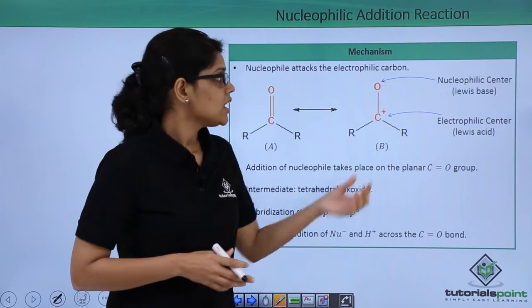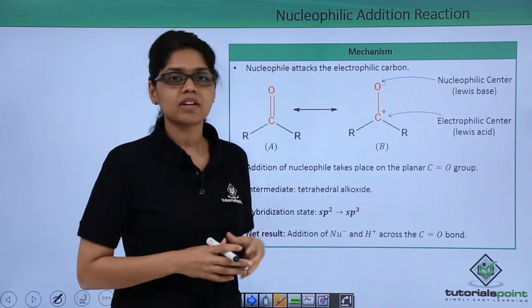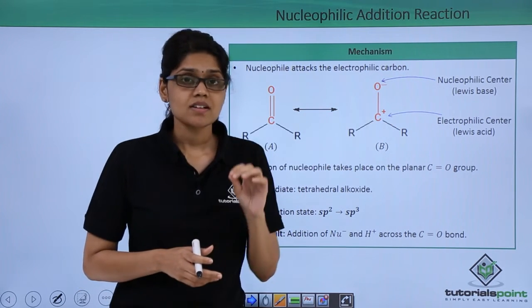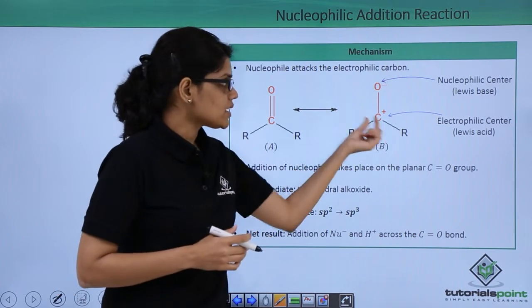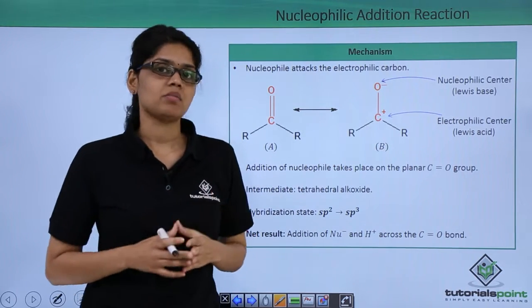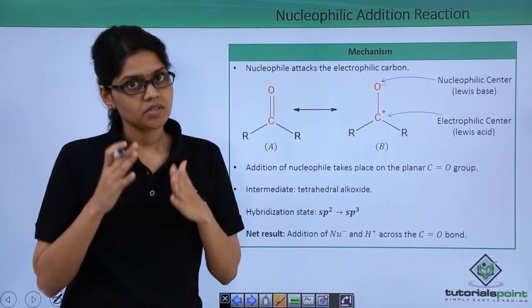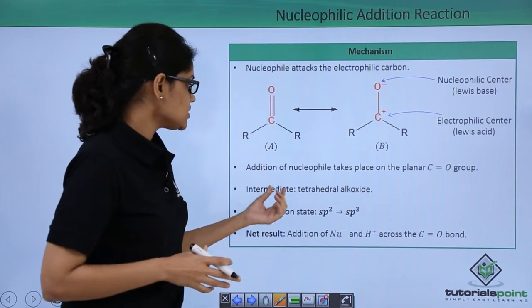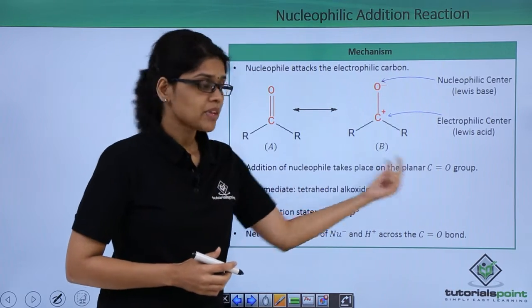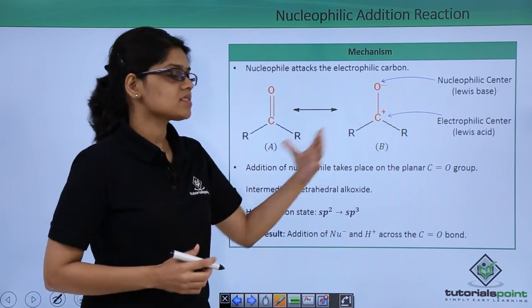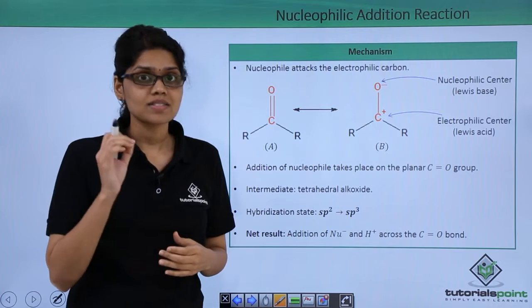So because of this, oxygen becomes a nucleophilic center, whereas carbon becomes an electrophilic center, such that any electron-rich species or a nucleophile can attack this particular carbon and bring about a nucleophilic addition reaction. As you can see, the addition of a nucleophile takes place on the planar C double bond O group, and the intermediate is a tetrahedral alkoxide ion.